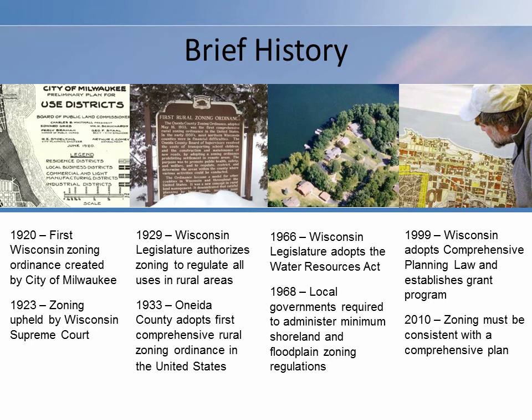In response, the Wisconsin legislature passed the Comprehensive Planning Law in 1999. The law provides a definition for a comprehensive plan and requires that zoning, subdivision regulations, and official maps be consistent with a comprehensive plan. In the early years after the law was passed, a grant program provided funding for local communities to plan. By 2013, more than 1,500 local communities had adopted a comprehensive plan to guide future land use decisions in their community.